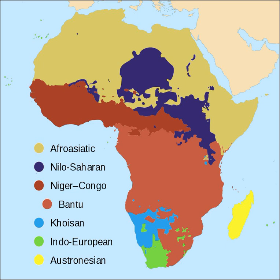Despite the geographical isolation, Malagasy still has strong resemblance to Bornean languages, especially the Maanyan language of southern Borneo. With more than 20 million speakers, Malagasy is one of the most widely spoken of the Austronesian languages. Afrikaans is Indo-European, as is most of the vocabulary of most African Creole languages. Afrikaans evolved from the Dutch vernacular of South Holland, the Hollandic dialect spoken by the mainly Dutch settlers of what is now South Africa, where it gradually began to develop distinguishing characteristics in the course of the 18th century. Most Afrikaans speakers live in South Africa.